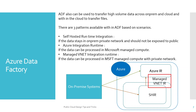The third pattern is Managed VNet Integration Runtime — a hybrid topology where the compute resources sit on the Azure data center but the private network stays within your own organizational network boundary. In the diagram, you can see the on-prem system on the left and Azure on the right, with three patterns: Azure IR, Managed VNet IR, and Self-Hosted IR (SHIR).